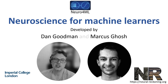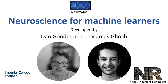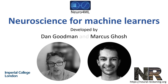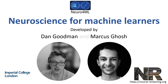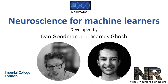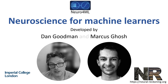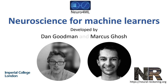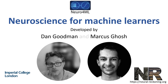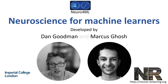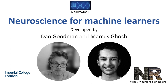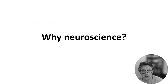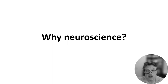Welcome to Neuroscience for Machine Learners. As the name suggests, this course is intended for people with a background in machine learning who want to learn a bit about neuroscience. It runs in person at Imperial College London as well as being freely available online. So let's start this first video by talking about why you should be interested in neuroscience.